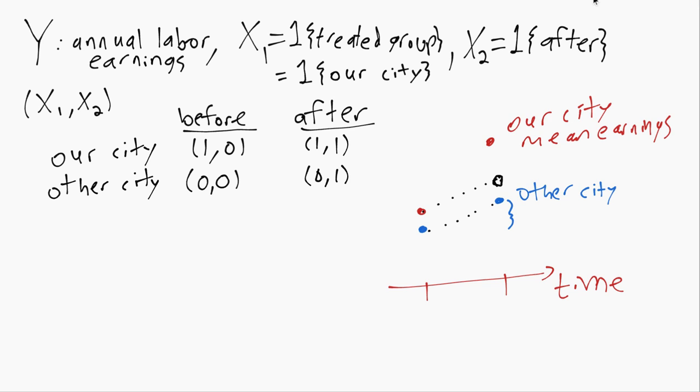So that when we want to estimate the effect of the policy, we should only look at the difference between our observed outcome in red and then this counterfactual point down here that comes from taking our starting point in our city and then adding the trend that we estimate from the other city.